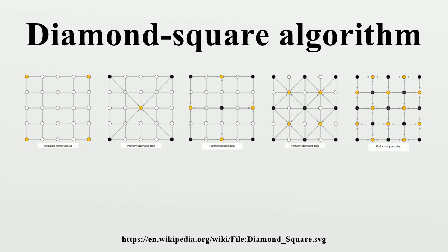The diamond-square algorithm starts with a 2D grid, then randomly generates terrain height from four seed values arranged in a grid of points so that the entire plane is covered in squares. It begins with a 2D array of size 2n plus 1. The four corner points of the array must firstly be set to initial values. The diamond and square steps are then performed alternately until all array values have been set.